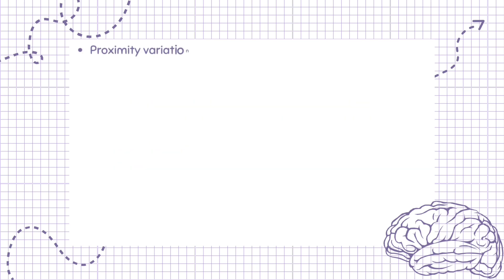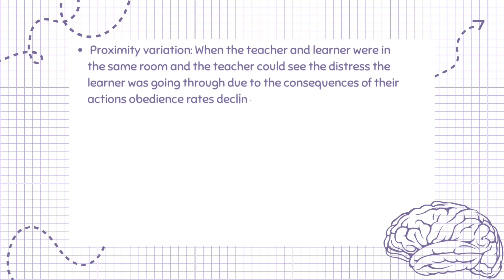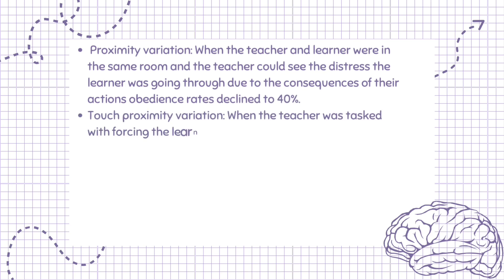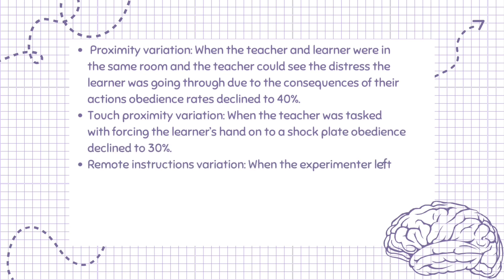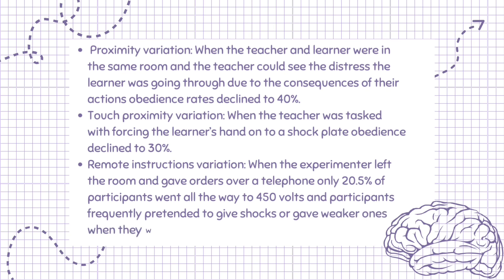Milgram conducted three variations for proximity. In the proximity variation, when the teacher and learner were in the same room and the teacher could see the distress the learner was going through, obedience rates declined to 40%. In the touch proximity variation, when the teacher was tasked with forcing the learner's hand onto a shock plate, obedience declined to 30%. In the remote instructions variation, when the experimenter left the room and gave orders over a telephone, only 20.5% of participants went all the way to 450 volts.